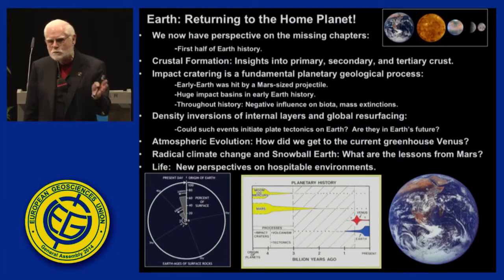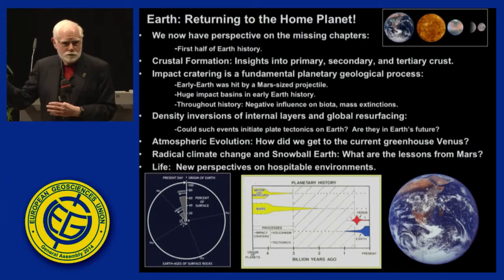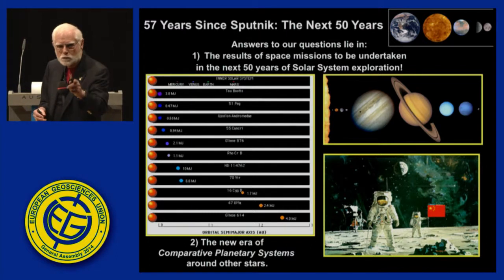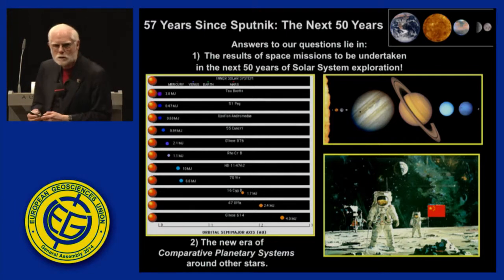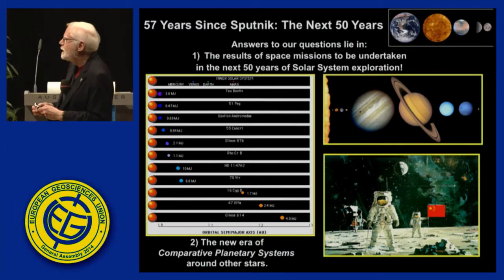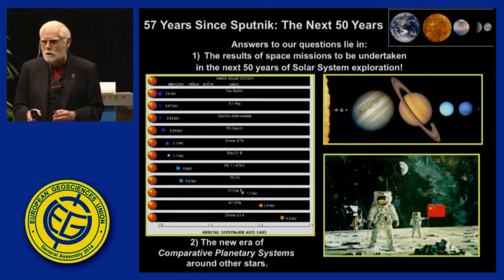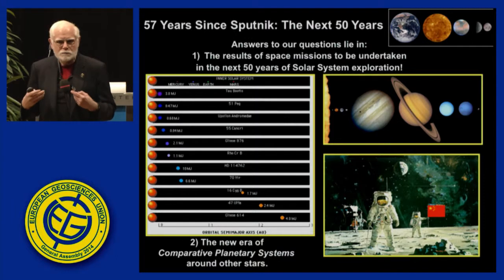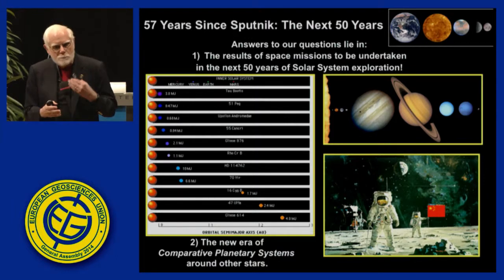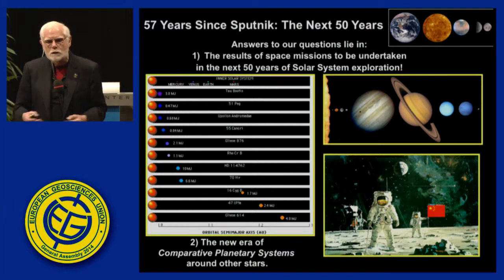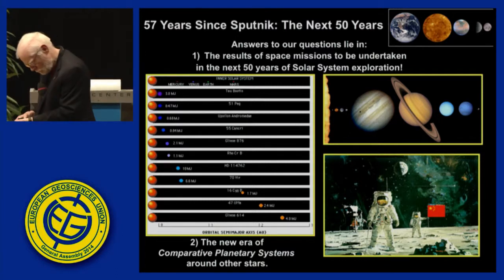But wait, there's more for young people who think we've covered everything. The answers to the many outstanding questions will rely on results of space missions to be undertaken and designed by you all for the next 50 years. And better than that, there's a new era of not just comparative planetology, but comparative planetary systems. We're discovering planets around other stars at an alarming rate — we used to be unique, forget it. Comparative planetary systems is the future, and we'll be able to understand much more about our home planet from the perspective of the solar system and other solar systems around other stars. It's an exciting time. Thank you very much.